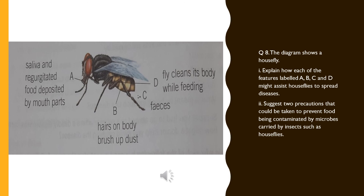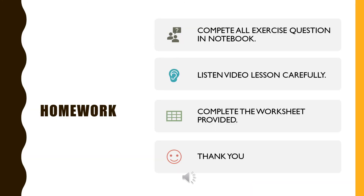The next question is: Suggest two precautions that could be taken to prevent food being contaminated by microbes carried by insects such as houseflies. Cover your food, wash raw food before eating, and eat freshly cooked food. Dear students, your homework is: complete all exercise questions in your notebook, listen to the video lesson carefully, and complete the worksheet provided. Thank you.